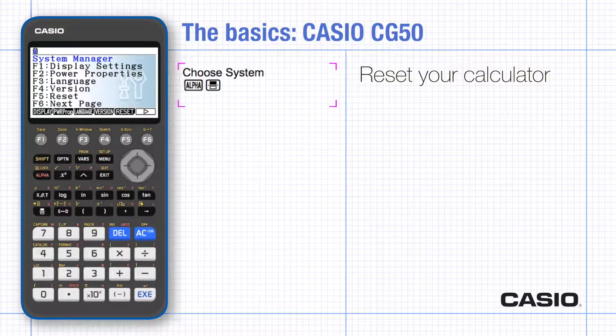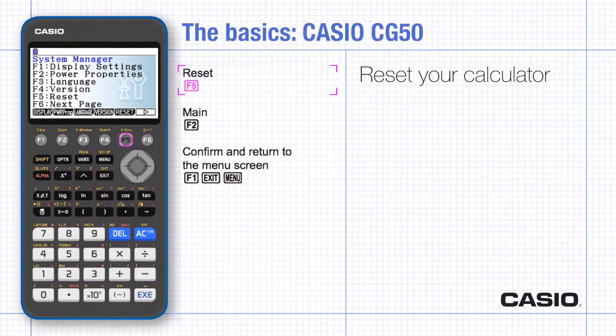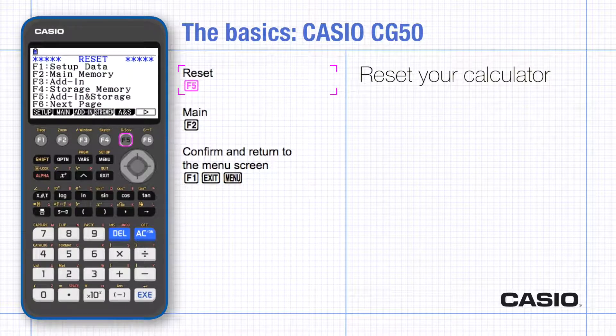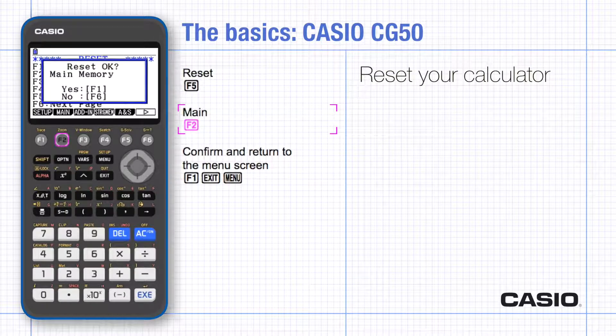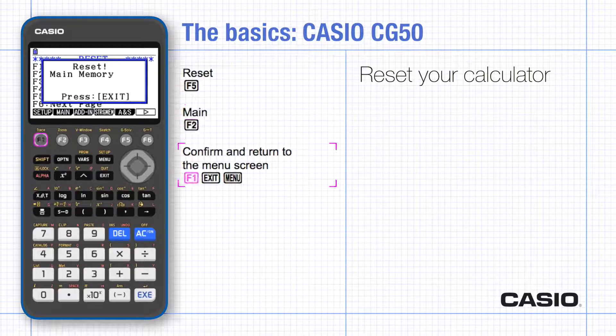Notice the on-screen menu for reset is F5. Choose reset and notice the labels for F1 to F6 have changed. Choose F2 to choose main here and you will be asked to confirm your choice.